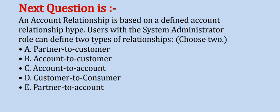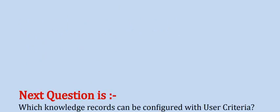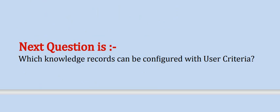The correct options are Option C and E. Next question: Which knowledge records can be configured with user criteria?